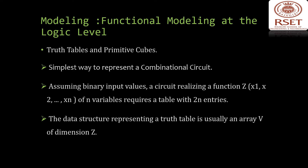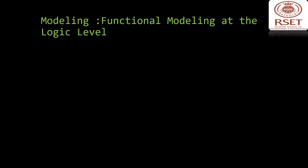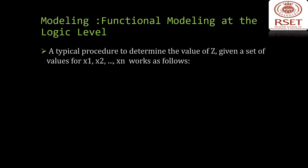Assume a binary input value and a circuit realizing a function Z with input values X1, X2, up to Xn — n variables. It requires a table of two-to-the-n entries. The data structure representing a truth table is usually an array V with dimension Z. The procedure to determine the value of Z given a set of values for X1, X2, up to Xn can be depicted with an algorithm.